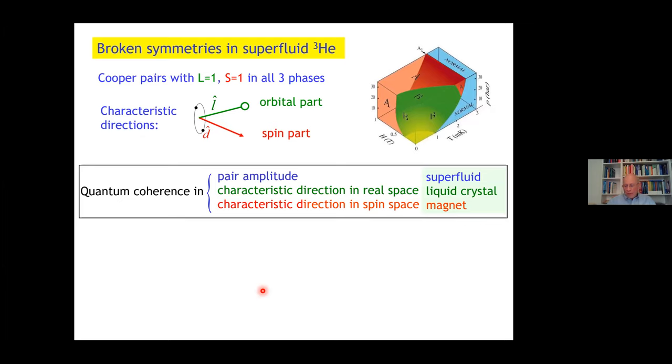Now in superfluid helium-3, we know that Cooper pairs have L equal to 1, S equal to 1 in all three phases. In every Cooper pair, there's a characteristic direction in orbital space and spin space. Due to the quantum coherence, they're all in the same state. Helium-3, superfluid helium-3, is at the same time a superfluid, a liquid crystal, and a magnet. That makes it so truly exceptional.